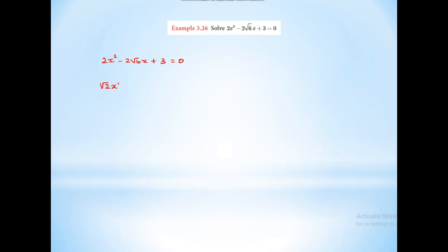Here we will see 2x², that means (√2·x) whole square. And 3 means (√3) whole square. Here we will see the middle term: 2 into √3 into √2·x. So we get (√2·x)² minus 2·√3·√2·x plus (√3)² equal to 0.